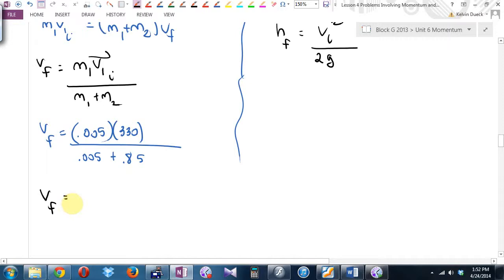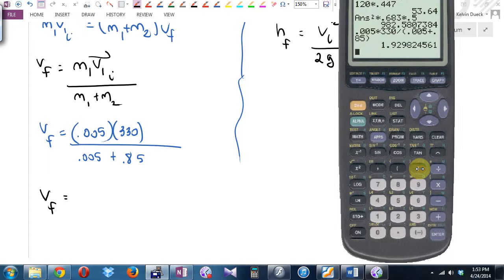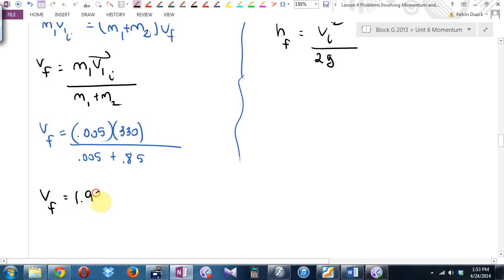After the collision, with what velocity do they move off together? Halen, what do we get? You get 1.93. Is that right?